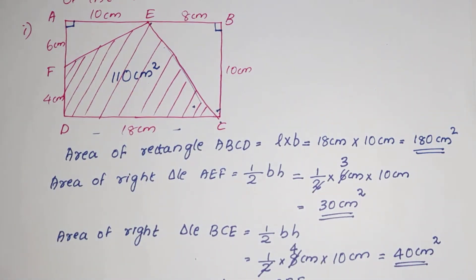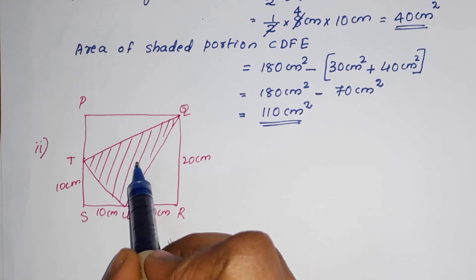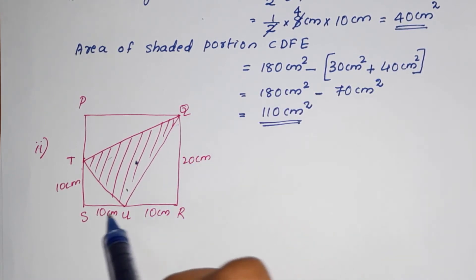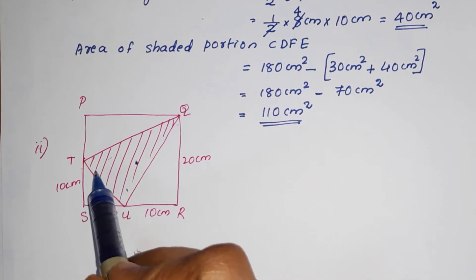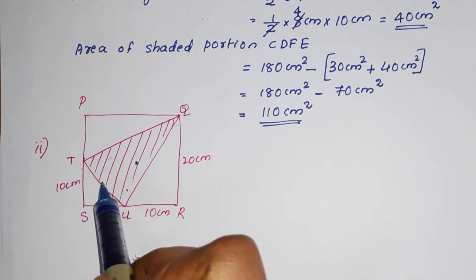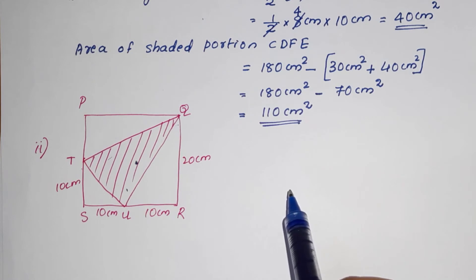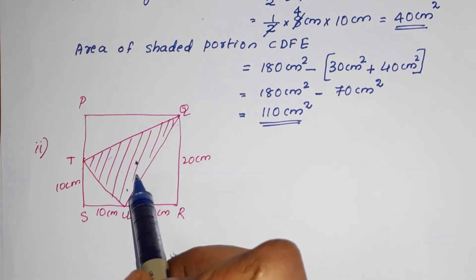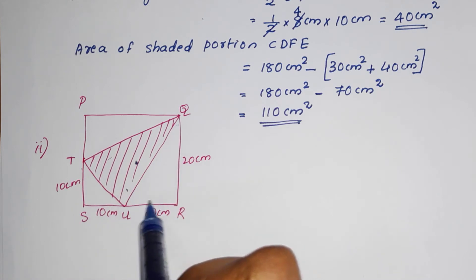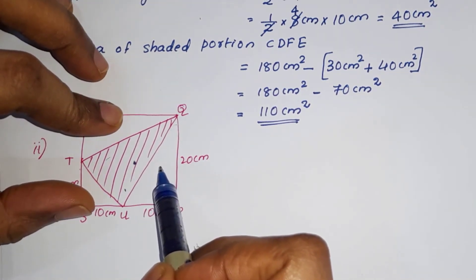This is the second part. We have a square, and the shaded portion is inside it. The figure contains 3 right-angled triangles. We need to find the shaded portion area by finding the square area and subtracting the areas of the right-angled triangles.